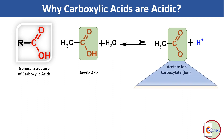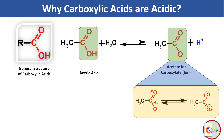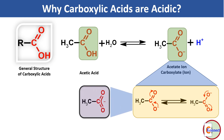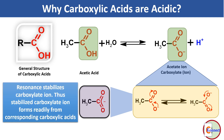If we closely see the structure of carboxylate ion, we find that the negative charge of the carboxylate group remains delocalized and shared by both of its oxygens. We can say that carboxylate ion has resonance. This resonance stabilizes the carboxylate ion, and thus the stabilized carboxylate ion is formed readily from the corresponding carboxylic acid.